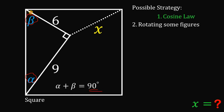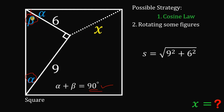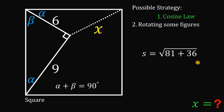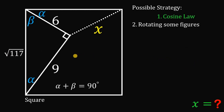Since the angle of the square right here must be 90 degrees, and this is beta, the other angle must be equal to alpha, because alpha plus beta equals 90 degrees. To use the cosine law, we need the side length of the square. We use the Pythagorean theorem on the right triangle: S equals the square root of 9 squared plus 6 squared. 9 squared is 81, 6 squared is 36, and 81 plus 36 equals 117. So S equals the square root of 117 — that is the side length of the square, and since it is a square, the other side is also the square root of 117.